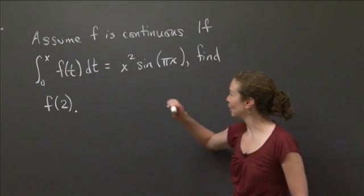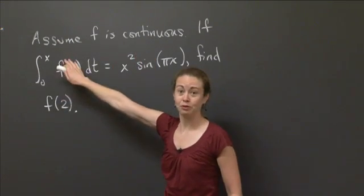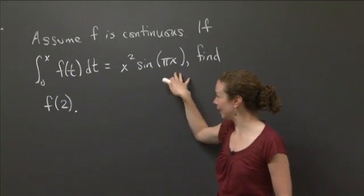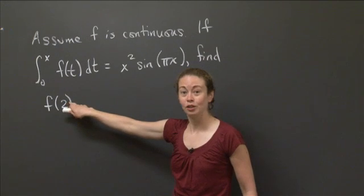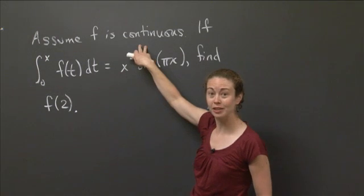So again, we're working on a problem where we know that f is a continuous function. We know the integral from 0 to x of f(t) dt is equal to a certain function, and we want to find f of 2. So what we're going to use, because we know little f is continuous, we can actually use the fundamental theorem of calculus.